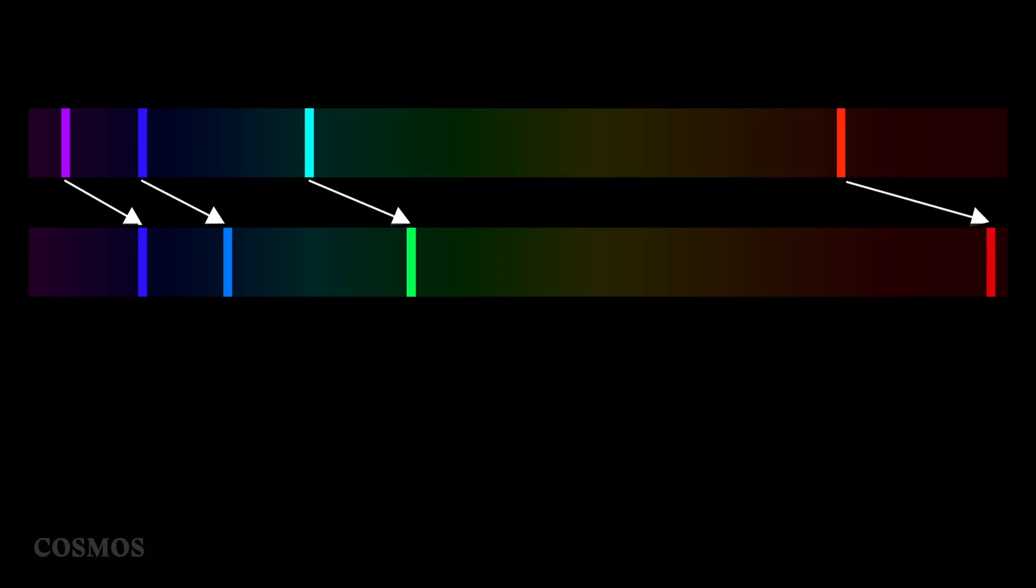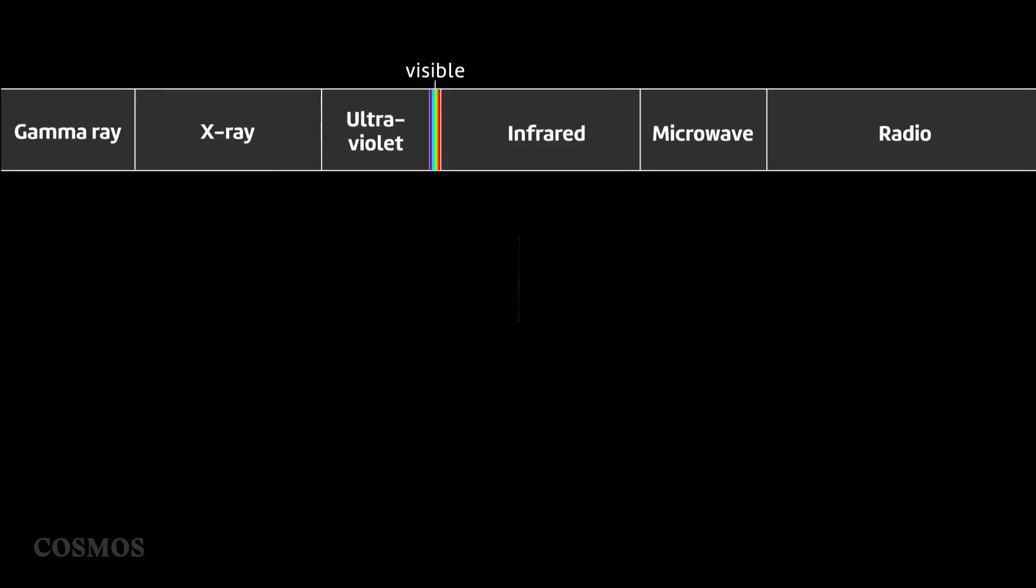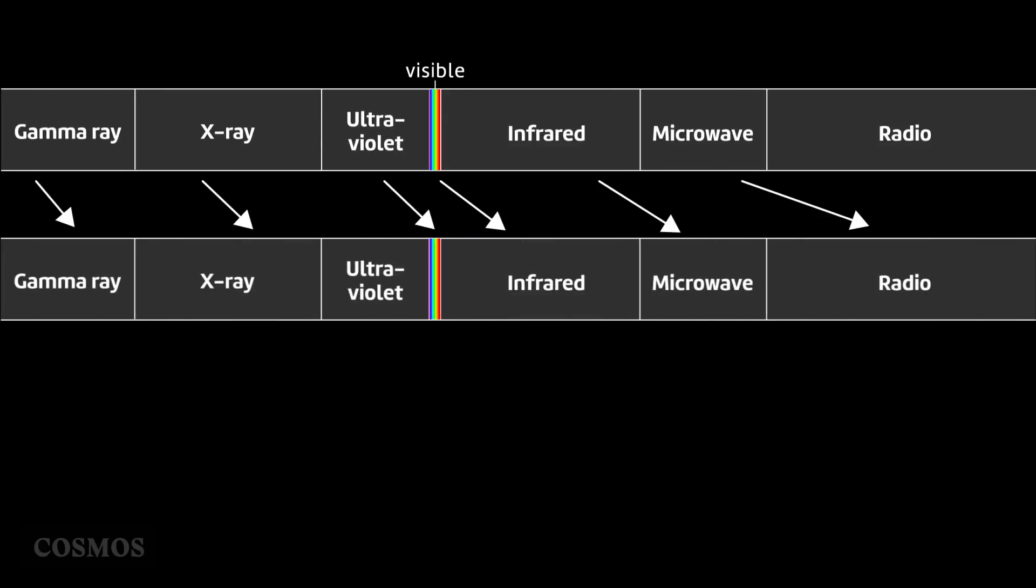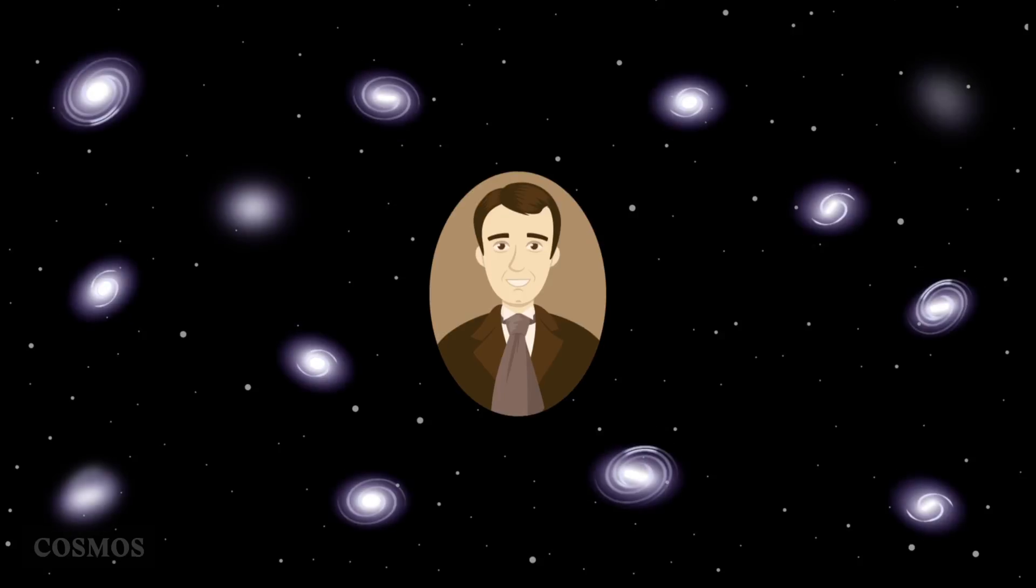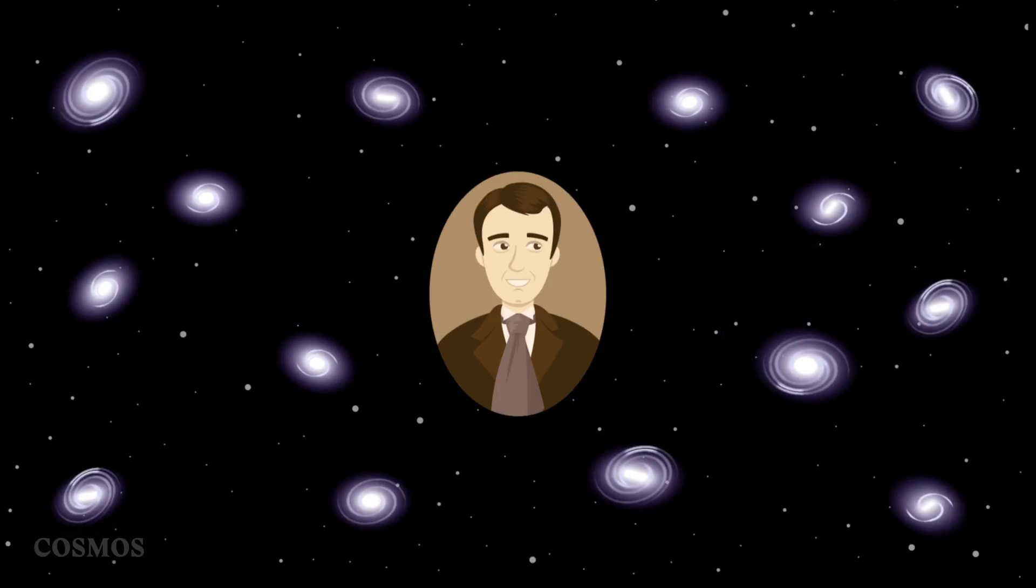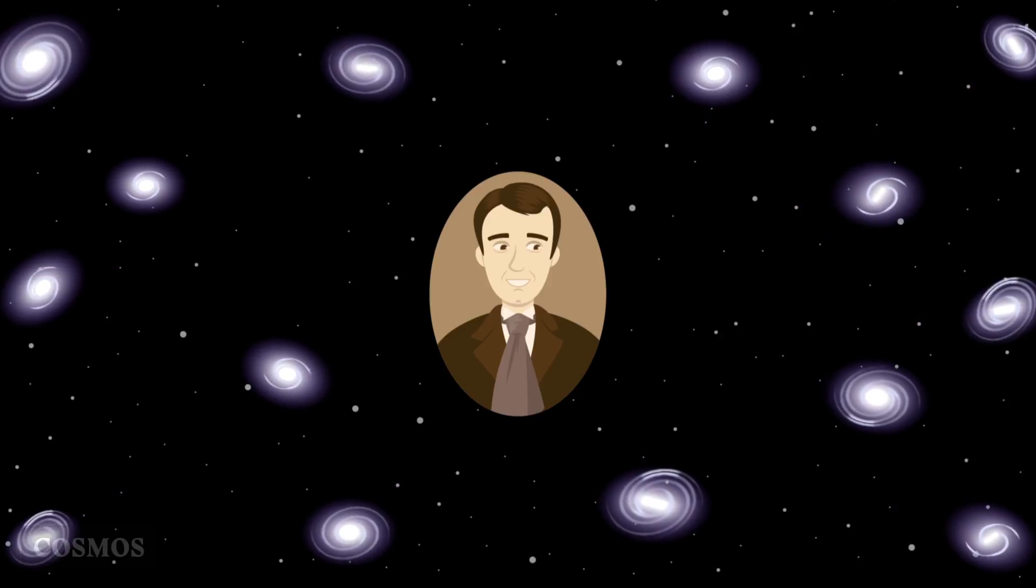So we say they are redshifted. But the shift applies for all wavelengths, whether they are visible or not. Slipher's big surprise was that it didn't matter which direction he looked. Pretty much every galaxy, in every direction, was moving away.